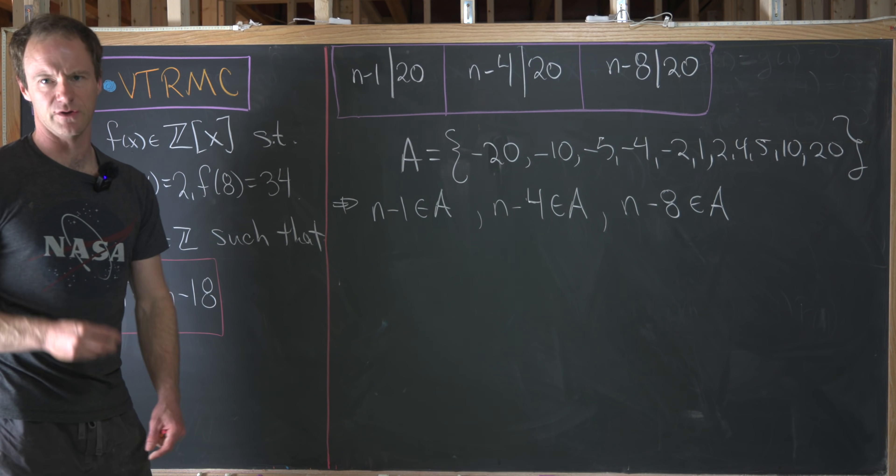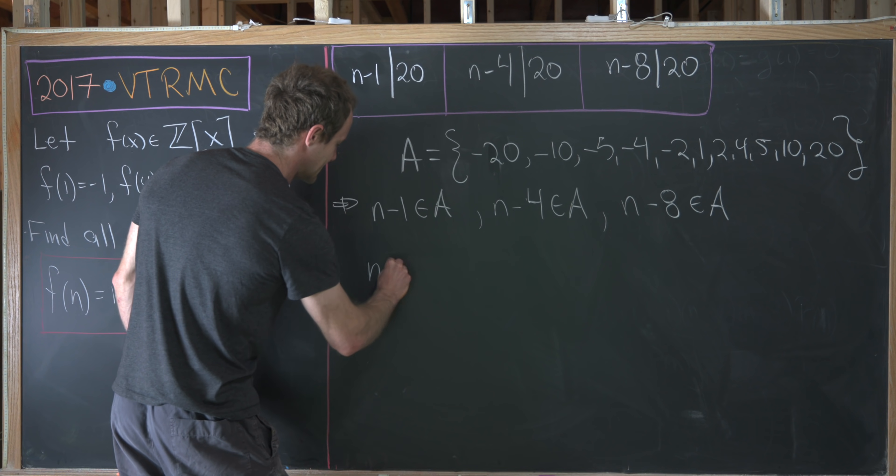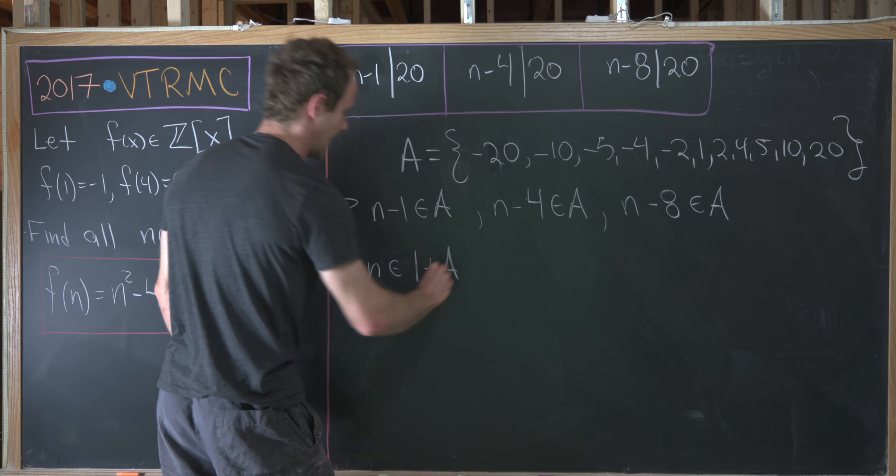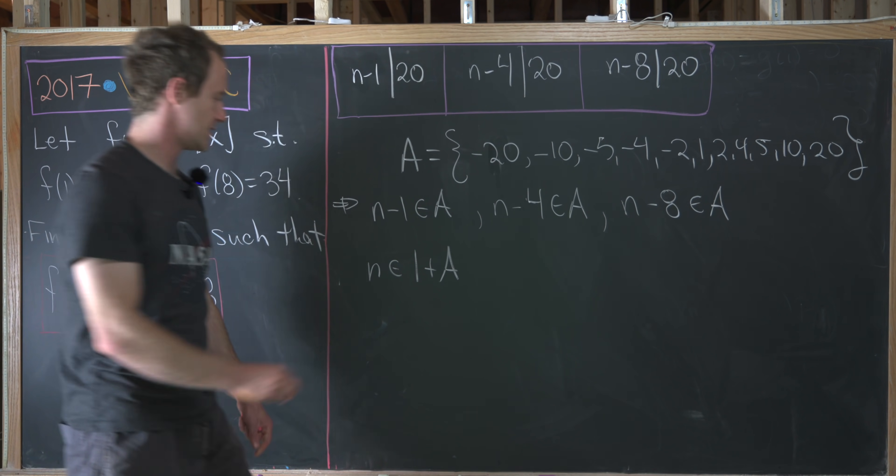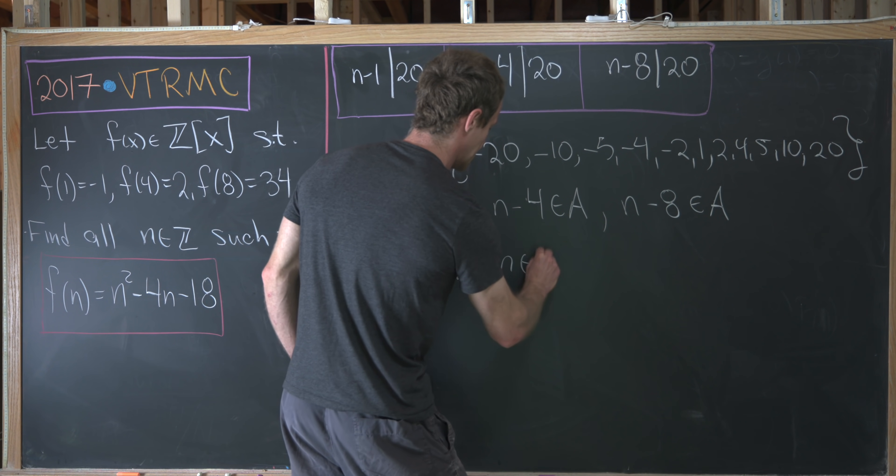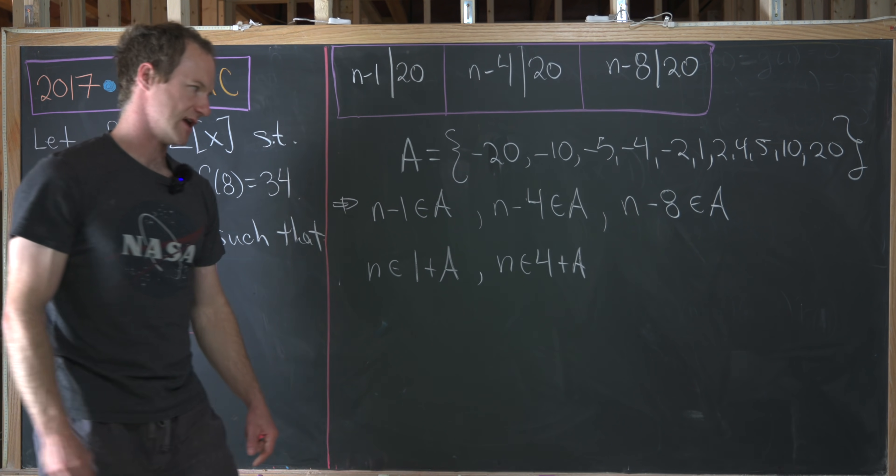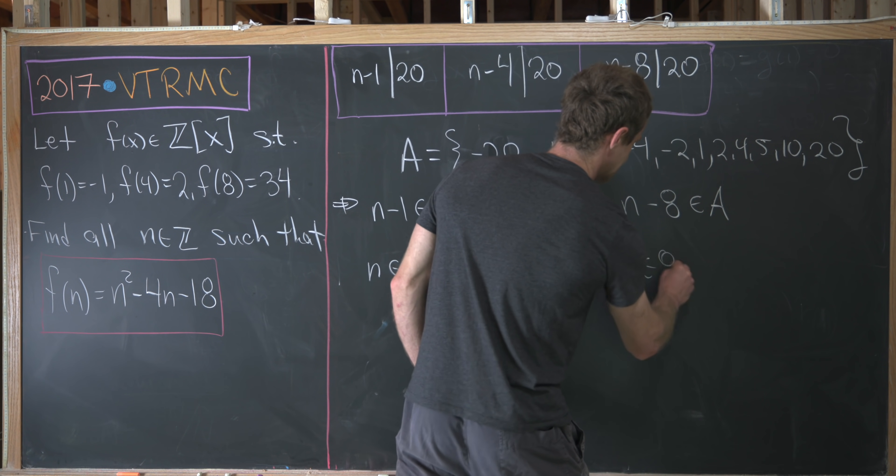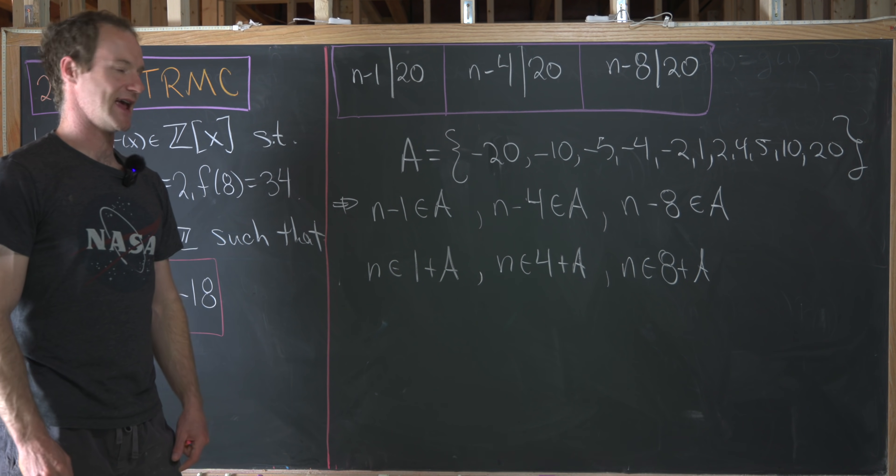But now I'm going to introduce a little bit of notation, which is fairly standard. That means that n is in the set 1 plus A. So that's just going to be every element of A plus 1. And then also n is in 4 plus A. That's going to be every element of A plus 4. And then similarly, n is in 8 plus A, every element of A plus 8.